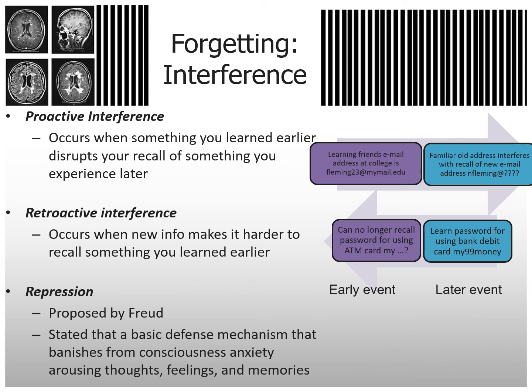Retroactive interference is the opposite: new information makes it harder to recall something you learned earlier. For example, you can no longer recall your old ATM PIN because you got a new debit card with a new PIN or password. Now you keep messing up the old PIN when you go to your other bank or credit card.